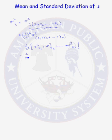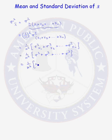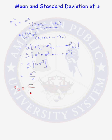The variance of x1 is sigma squared, the variance of x2 is sigma squared, and the variance of xn is also sigma squared. We have n sigma squareds, so this simplifies to sigma squared over n. Taking the square root, we find that the standard deviation of x-bar is equal to sigma over the square root of n.